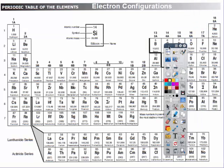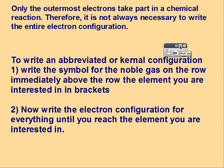Remember that your noble gases are this column, so we can only use those in brackets. Then you're going to write the electron configuration for everything from that noble gas until you reach the element you're interested in.